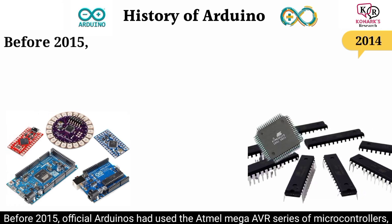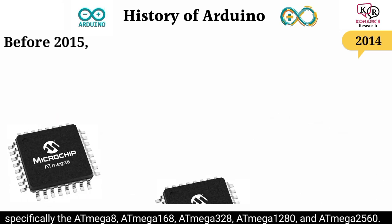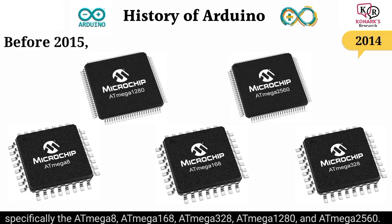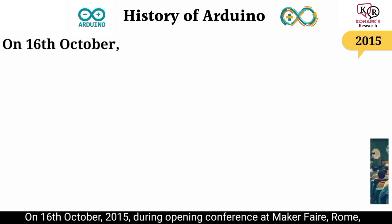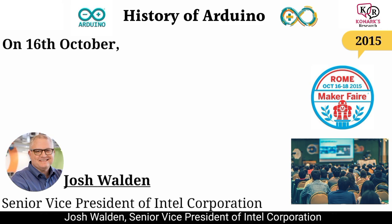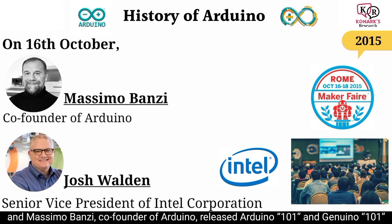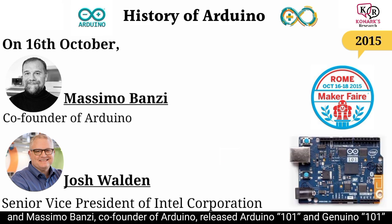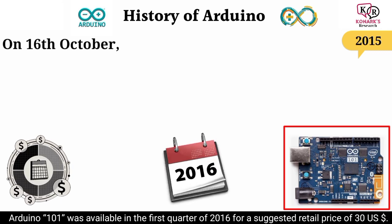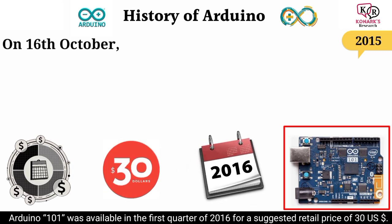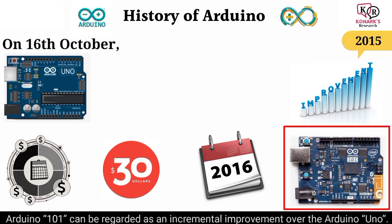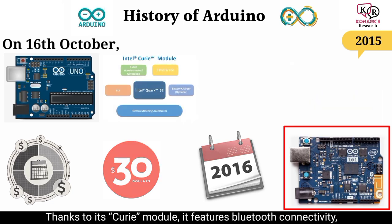Before 2015, official Arduinos had used the ATmega AVR series of microcontrollers, especially the ATmega8, ATmega168, ATmega328, ATmega1280, and ATmega2560. On 16 October 2015, during the opening conference at Maker Faire Rome, Josh Walden, Senior Vice President of Intel Corporation, and Massimo Banzi, co-founder of Arduino, released the Arduino 101 and Genuino 101. Arduino 101 was available in the first quarter of 2016 for a suggested retail price of $30 US dollars and can be regarded as an incremental improvement over the Arduino Uno, featuring Bluetooth connectivity, gesture recognition, and a six-axis motion sensor.